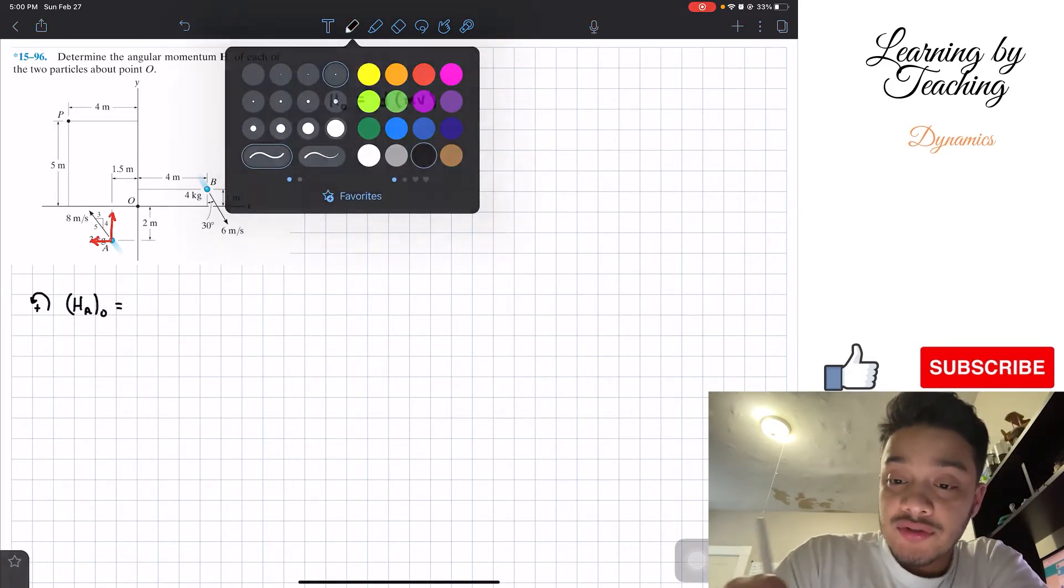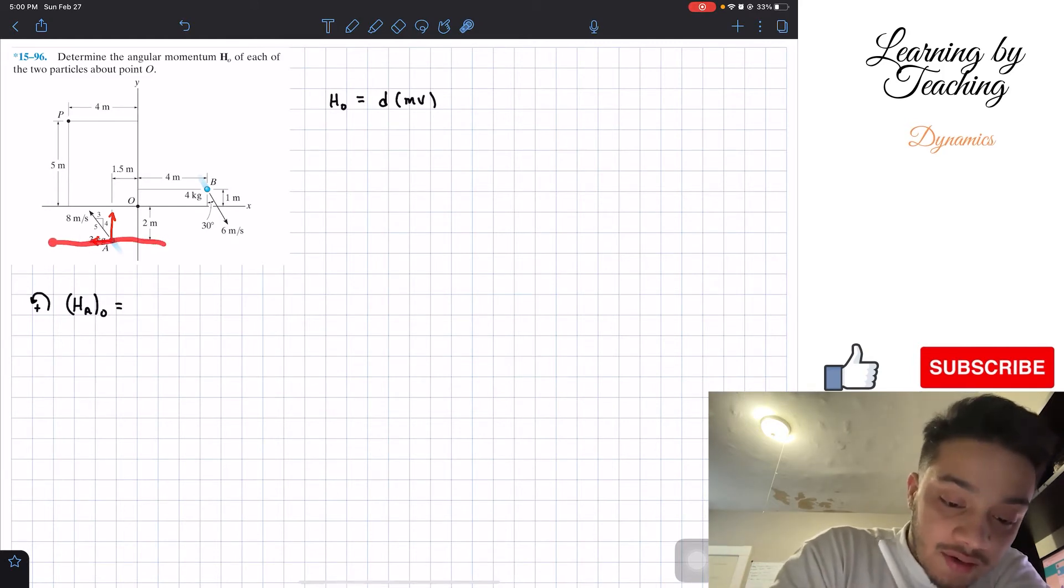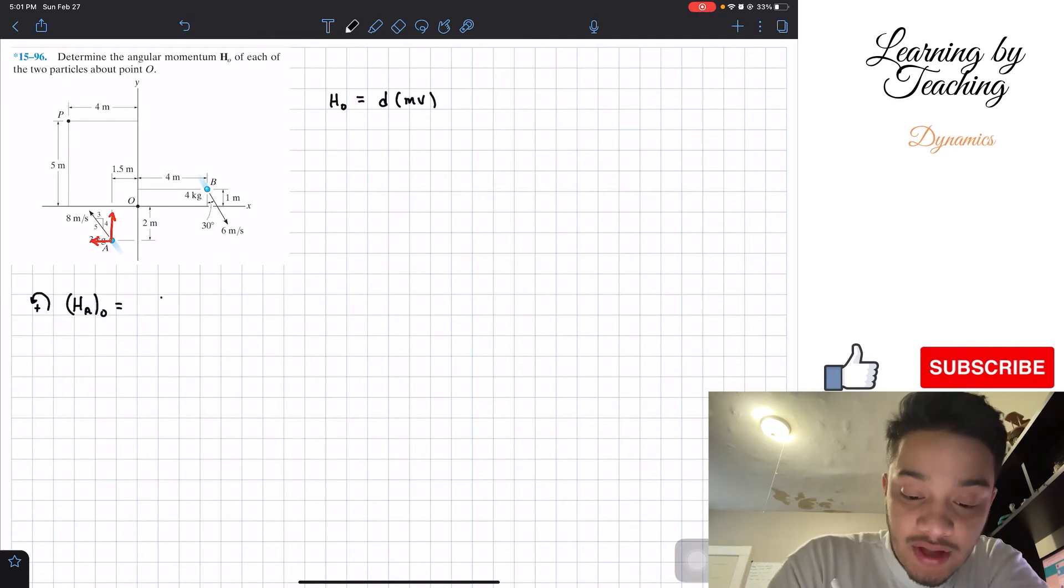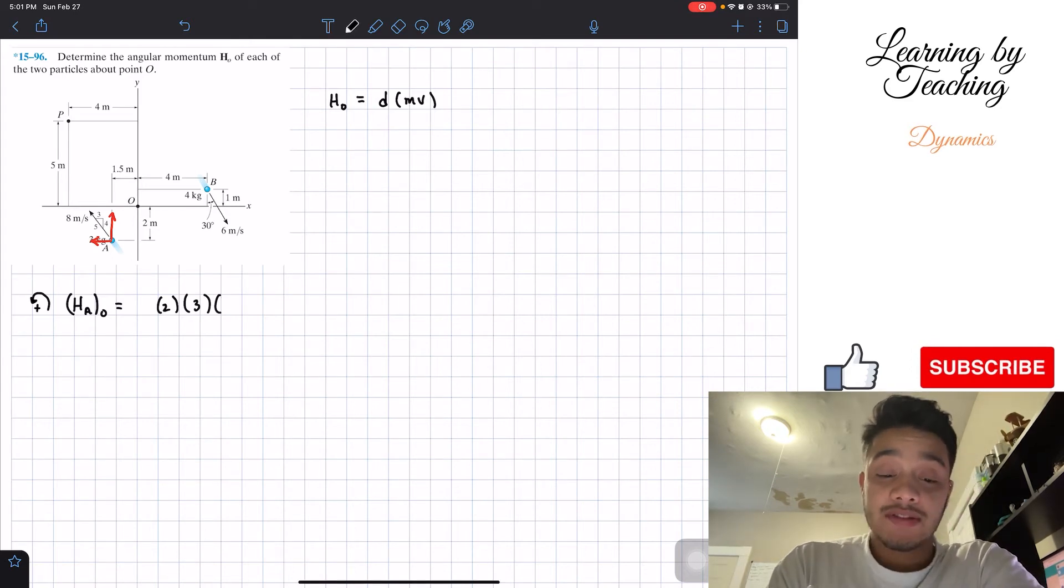We're going to start with its x component. Its x component acts in a line of action like this, so the distance is two meters. We're going to have two meters multiplied by the mass, which is three kilograms, multiplied by its velocity. Its x component of this velocity has magnitude eight, but we have three out of five going in that direction.